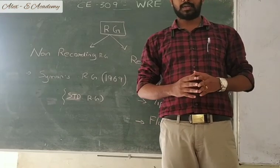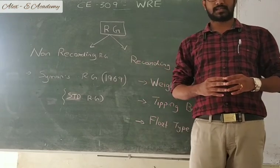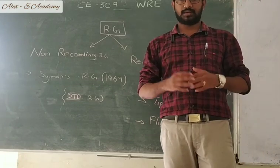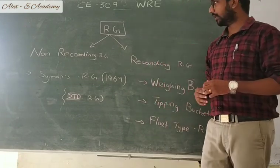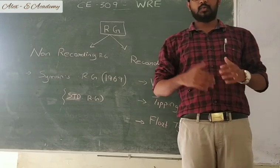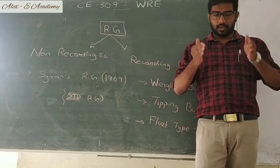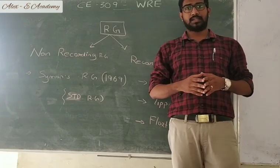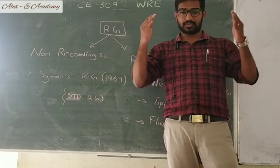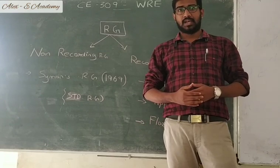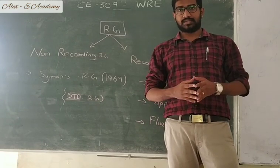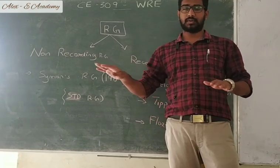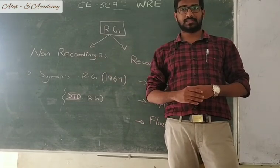This is an important question typically asked in different competitive exams, so please be careful. When precipitation occurs, we measure only the depth of rainfall which falls on a level surface without any losses. The loss of rainfall such as evaporation, percolation, infiltration, etc. are eliminated, and we measure the depth in centimeter or millimeter.